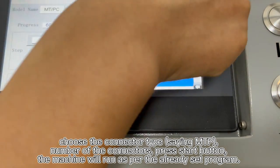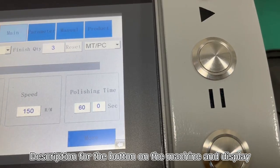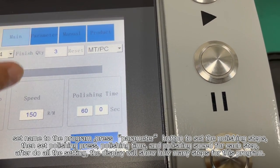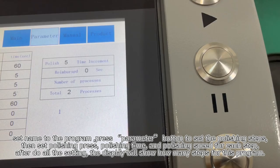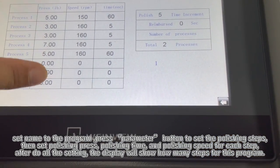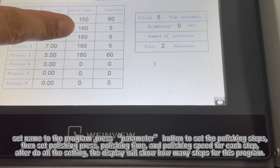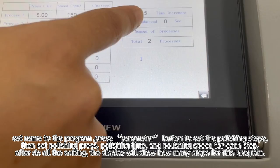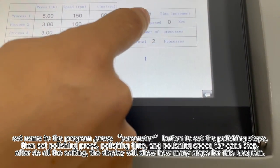And now we will press this. This is the display for the main menu. This is the parameter. You can see it can set different processes, the pressure for each process, the polishing speed for each process, and polishing time for each process. It will show you how many processes you want to set.